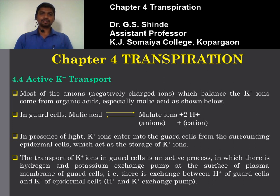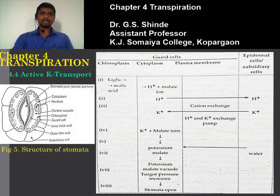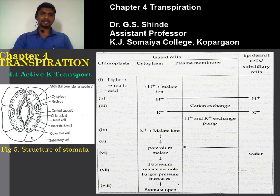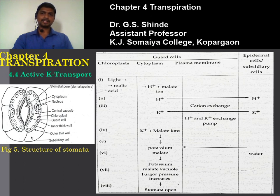There is an exchange between H+ ions of guard cells and K+ ions of the epidermal cell — this is an H+/K+ exchange pump which exists at the surface of the plasma membrane of the guard cell. The stomata structure consists of guard cells surrounded by epidermal or subsidiary cells. The guard cell consists of starch-containing chloroplasts, a lining layer of cytoplasm, and a plasma membrane.